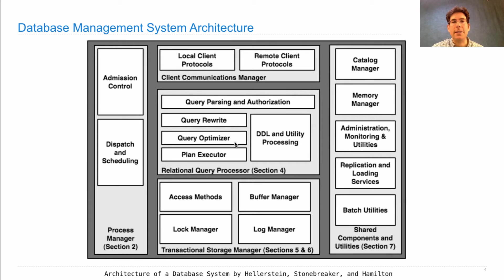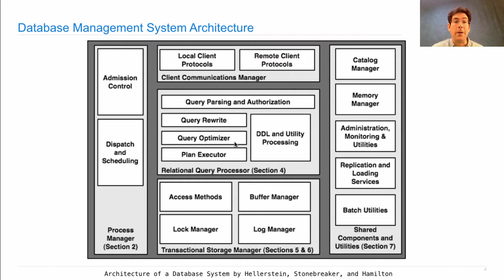The reason SQL is called a declarative language is that we specify what the output looks like. But when we write a select statement, we're not actually specifying how exactly the computation will be carried out. It's not the case that we always build the joined table and then filter it and then map the results. Sometimes the processing happens in a different order because that order would result in more efficient computation of the same result.